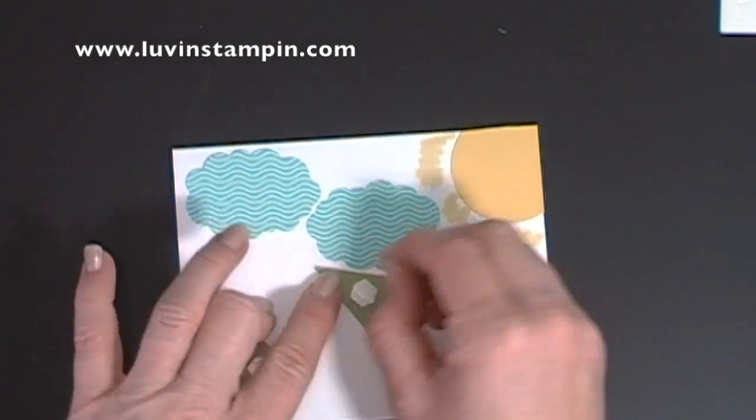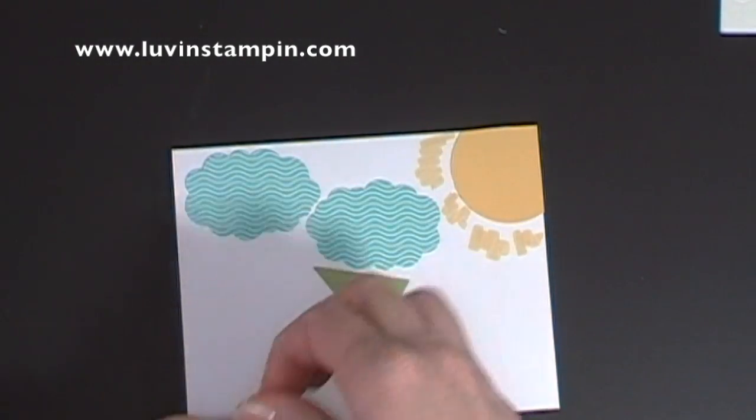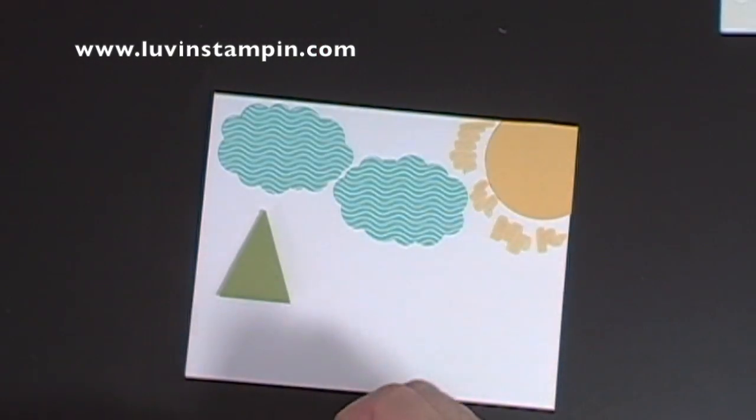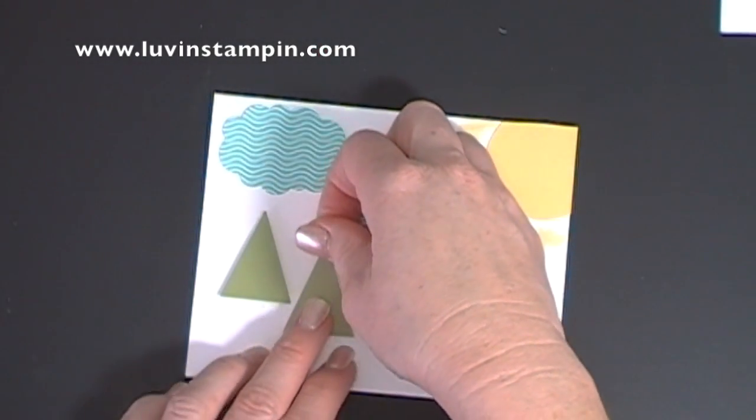I'm just going to peel the backing off there. Put one tree up higher than the other, so they're kind of staggered, and I want them really close together.